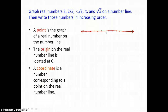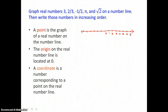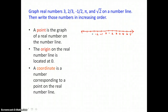We have zero in the center — that's called the origin. We have positive integers to the right and negative integers to the left. Be sure to pause the video and read the terms and definitions included in the video. You might want to include them in your notes.